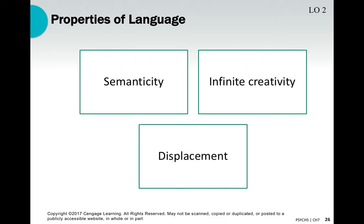Language adheres to three important properties. First, semanticity: we use symbols — words, pictures, emojis — that all carry meaning. Second, infinite creativity: in English there's a finite number of words, but there's almost an infinite number of possibilities to combine them meaningfully into sentences. Third, displacement: language allows us to think and talk about things in terms of past, present, and future — to remove ourselves from the here and now. We need to be able to discuss things beyond the present moment.